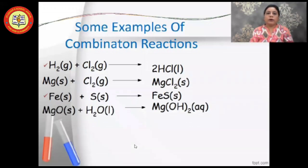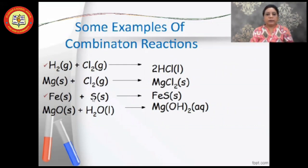A few more examples of combination reaction: hydrogen gas plus chlorine gas gives hydrogen chloride; magnesium combines with chlorine to give magnesium chloride; iron combines with sulfur to give iron sulfide; and magnesium oxide combines with water to give magnesium hydroxide.